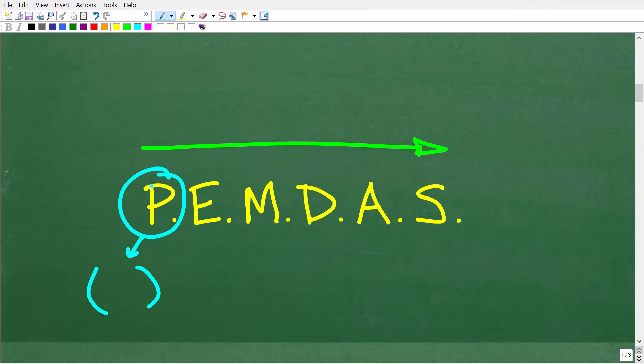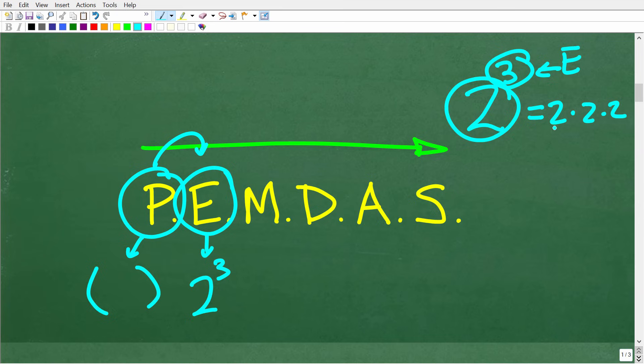All right, so if your math problem has any grouping symbols, this is where you're going to start. Now, if it doesn't, you're just going to move on to the next thing, which is E. All right, now E stands for exponents, but really you can think of this as powers. So something like 2 to the third power. So if I have 2 to the third power, this 3 up here is called the exponent. This 2 is called the base, and 2 to the third power means take 2 and multiply it by itself 3 times. All right, so again, not every math problem is going to have parentheses, grouping symbols, or powers, but if it does, you're going to have to do it in this order.